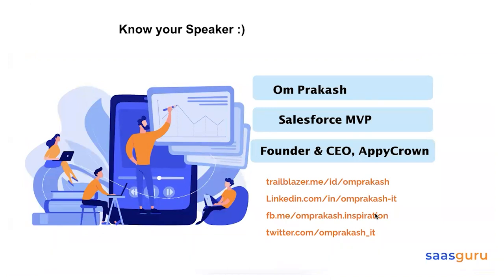A little about me: I'm Om Prakash, a Salesforce MVP — one of the unique recognitions given by the Salesforce Trailblazer community. I've been an MVP since 2020. I'm also the founder and CEO of API Crown, a Salesforce consulting company focused on product development and software training. You can connect with me on Trailblazer, LinkedIn, Facebook, and Twitter. I'm happy to guide you in your Salesforce career journey.